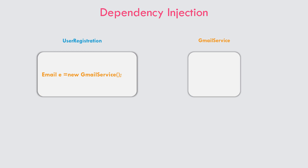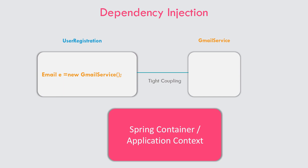Generally what we do is create an interface and create an object for the respective class. What happens is that you are tightly coupling Gmail service with user registration. In the future, if you want to remove Gmail service and replace it with Outlook service or Yahoo service, it's going to be very difficult. If you're trying to test user registration with other services like Outlook, the testing is also not going to work easily. This is tight coupling and we should avoid this at any cost. That's where the Spring framework comes in — Spring provides an application context that keeps track of all the objects or components and maintains their lifecycle. Whenever a component like user registration requires some component, it will try to provide that component to user registration.